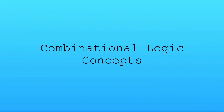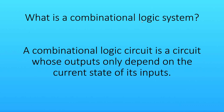First, we have to understand what combinational means. A combinational logic circuit is a circuit whose outputs only depend on the current state of the inputs — think of it like a function. If we put in some inputs, we will always get the same output. There will never be a time in combinational logic where you put in the same inputs and get a different output, because that would be sequential logic. A combinational circuit's output depends on the combination of its inputs — for instance, a full adder circuit will always give the same outputs for the same inputs.